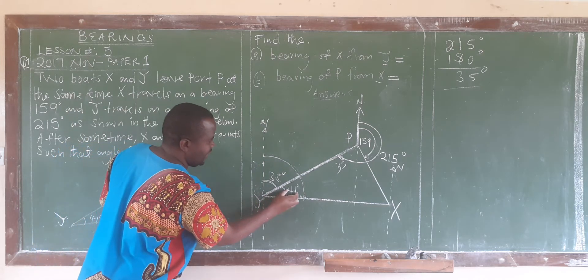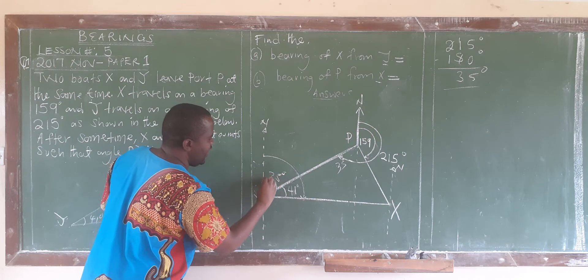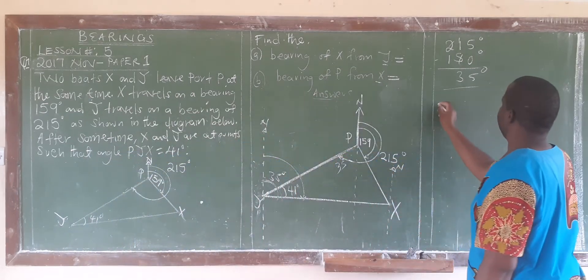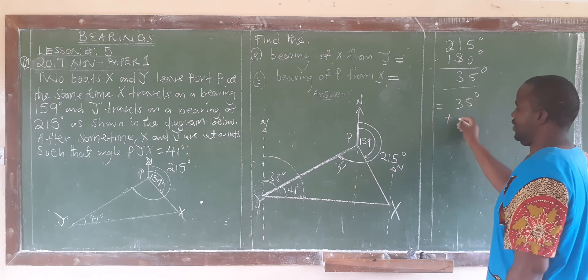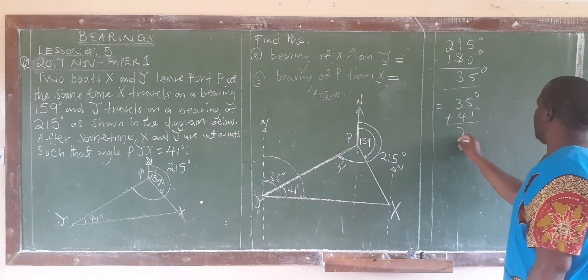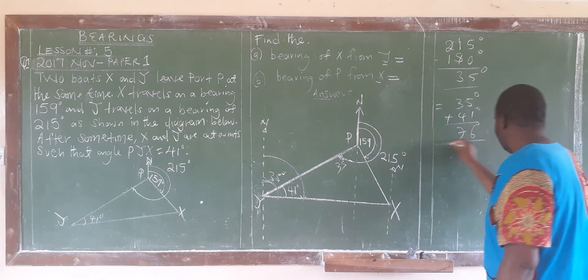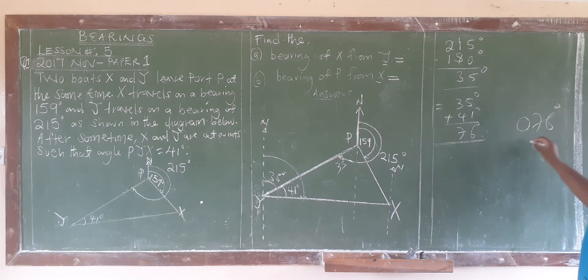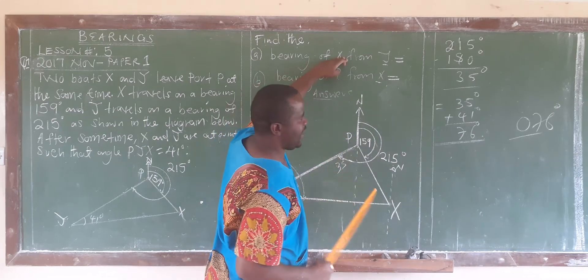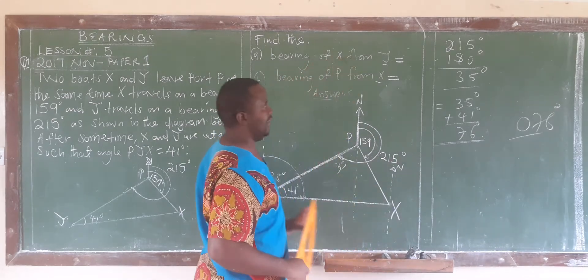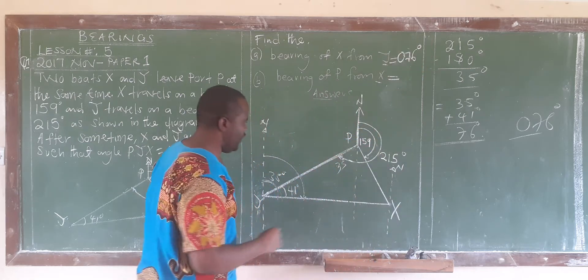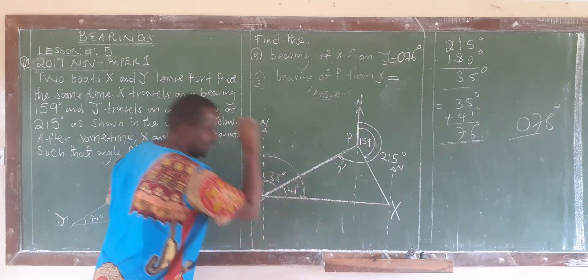Now, since we are able to calculate the entire angle here, we are going to say the angle there was 35 degrees plus 41 degrees, and this is 76 degrees. But in terms of bearing, remember the three figure bearing. So if you have got 76 degrees, you fix in a zero there. So the bearing of X from Y is supposed to be 076 degrees.